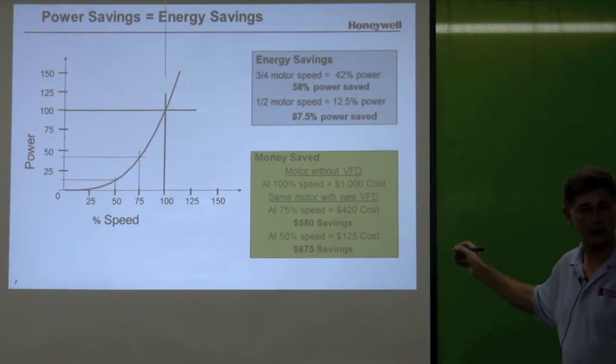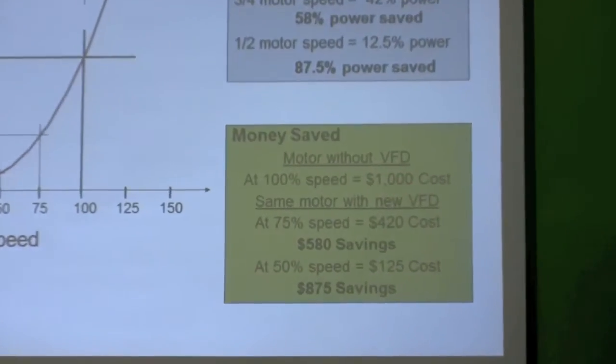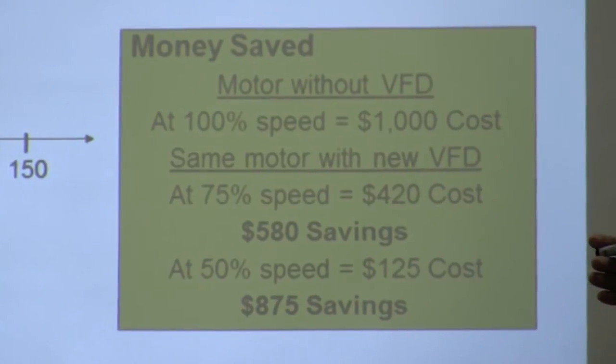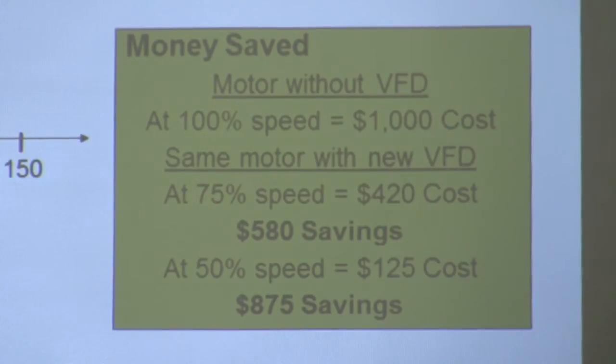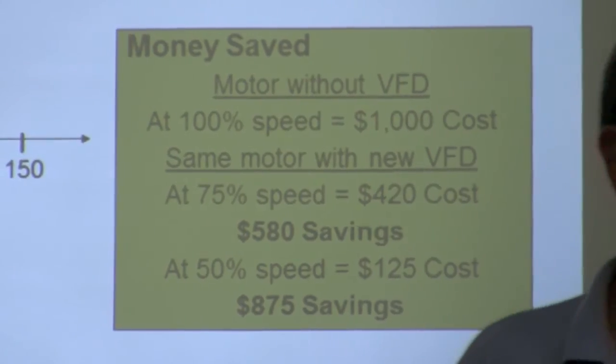Money save calculation right here on the graphic. If you just assume $1,000 at 100% at 60 hertz full speed, if you back it off to 75%, and generally you can, that's your savings. You cut it in half, maybe a little more than half.